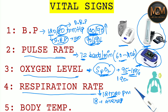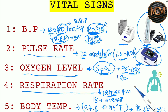Now let's talk about body temperature. The normal range is from 97.5 to 99 degrees Fahrenheit. If you get a value within that range, you don't need to worry. The average value is 98.6 degrees Fahrenheit, which is 37 degrees Celsius.